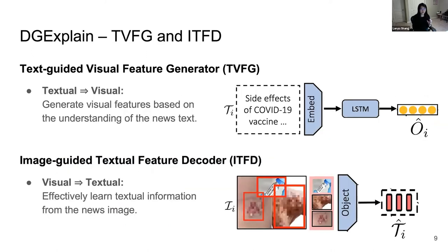The multimodal features extracted by the first module are then used by the TVFG and ITFD modules to generate cross-modal features. The TVFG module generates visual features based on the understanding of the news text, while the ITFD module is designed to learn textual information from the encoded news image.